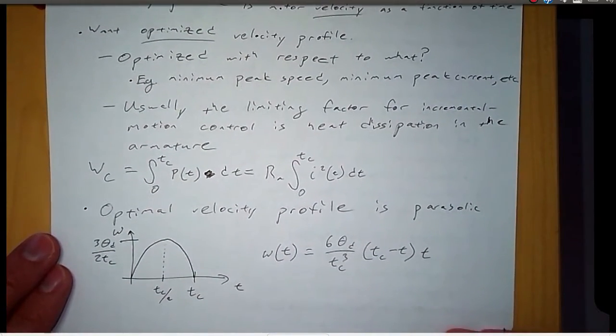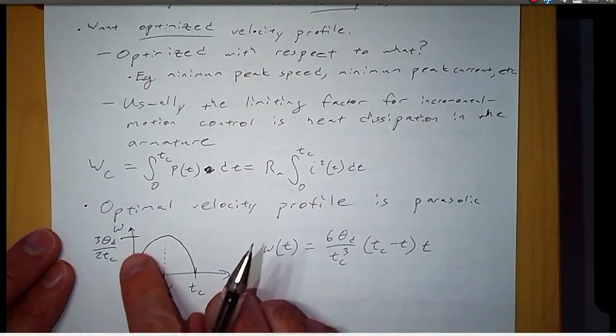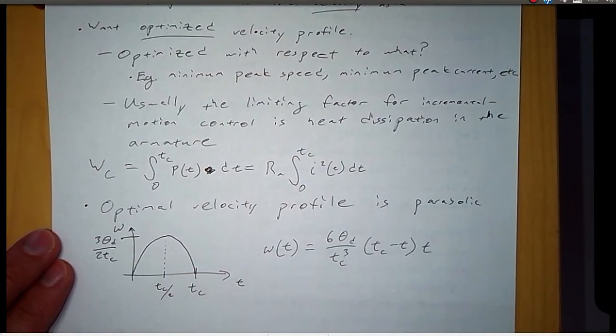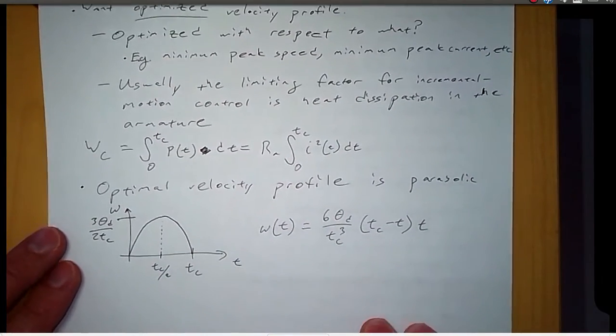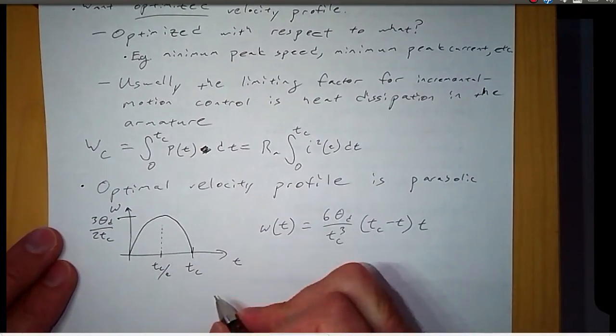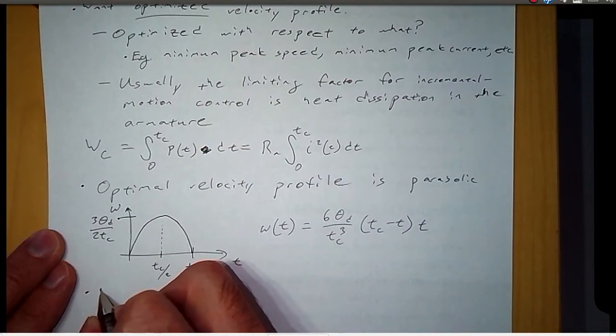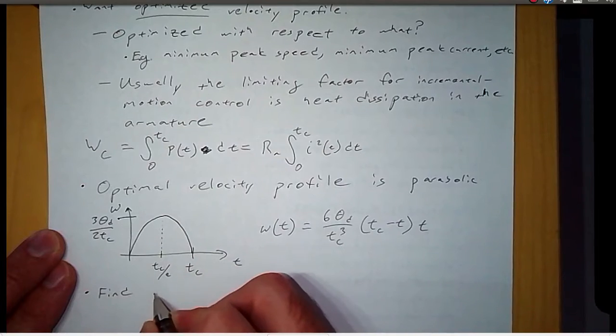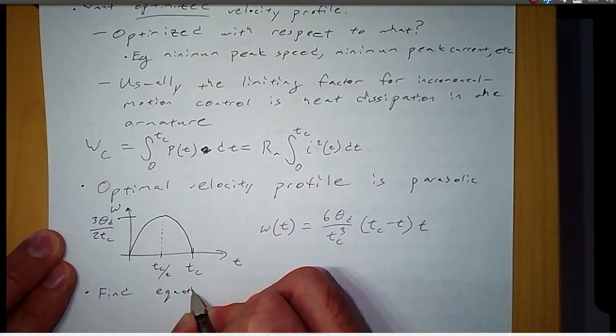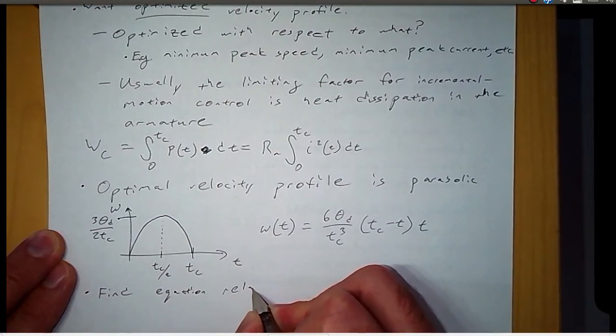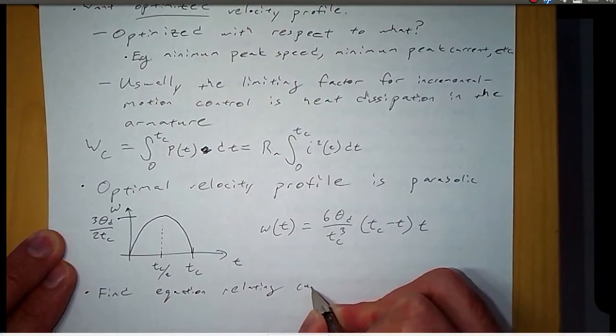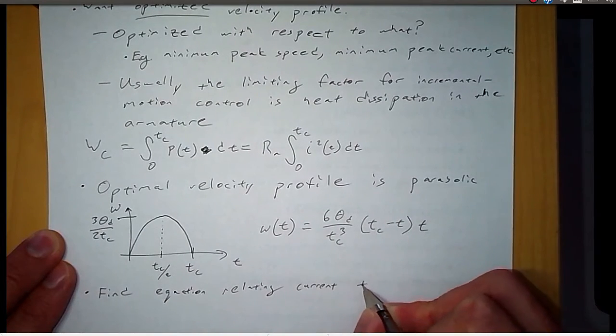Now, we're going to look at a couple of other different velocity profiles and see how they do as far as heat dissipation or heat generated, heat that's required to be dissipated. And so we need an equation relating the current to the angular velocity.